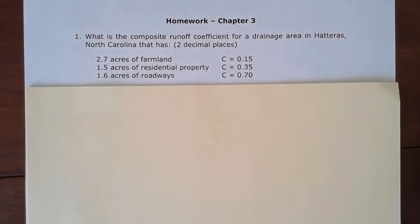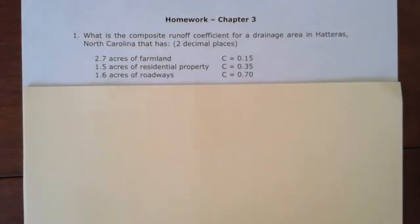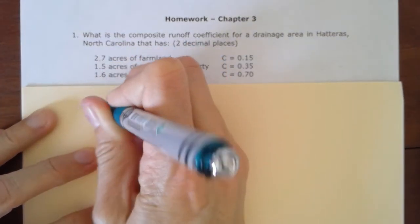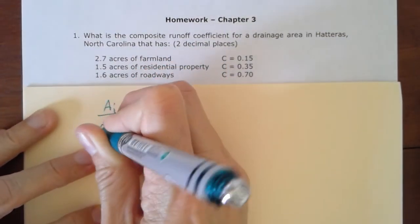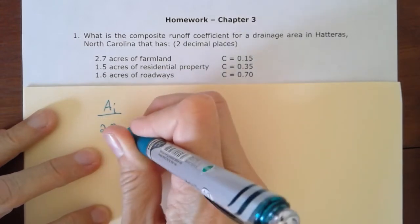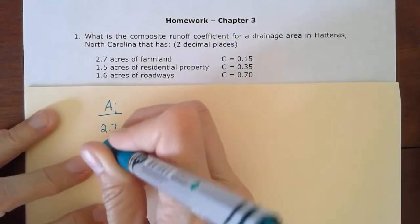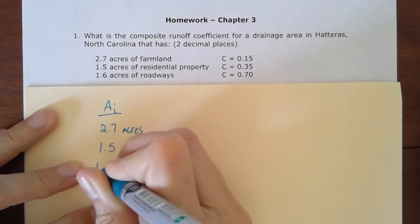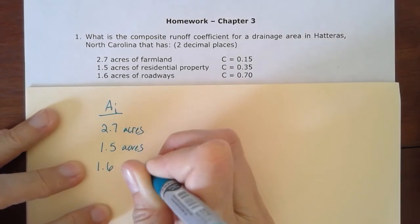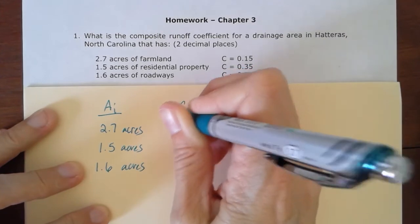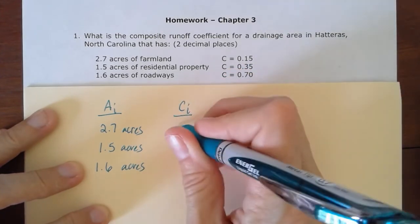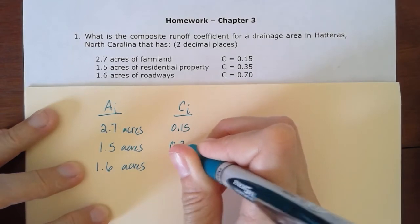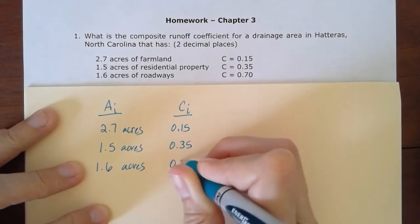I'm going to make a little table with this information. I have my individual areas: the first one is 2.7 acres, the second is 1.5 acres, and the third is 1.6 acres. And then I have the individual coefficients for each: for the first one it's 0.15, for the second section 0.35, and for the third section 0.70.